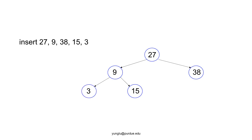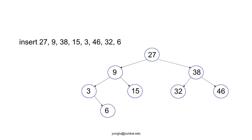Next, we insert 3. This number is smaller than 27 and is inserted to the left side of the root. 3 is also smaller than 9, so 3 becomes the left child of 9. The next number is 46. It is greater than 27 and 38, and becomes the right child of 38. The next number is 32. It goes to the right side of 27 and the left side of 38. The next number is 28. It goes to the left side of 27, the left side of 9, and the right side of 3. The next number is 29. It goes to the right side of 27, the left side of 38, and the left side of 32.